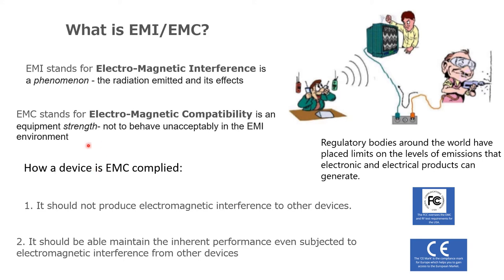So how does a device become EMC compliant? First, it should not produce electromagnetic interference — all problems start with electromagnetic interference. Second, it should be able to maintain inherent performance even when subjected to electromagnetic interference from other devices. So susceptibility is also very much required: the device should not emit, and it should sustain electromagnetic interference.